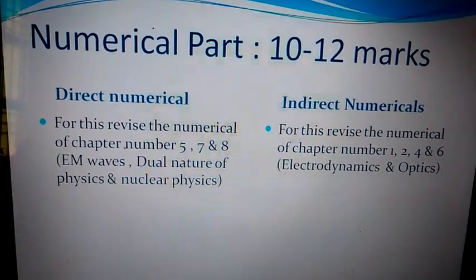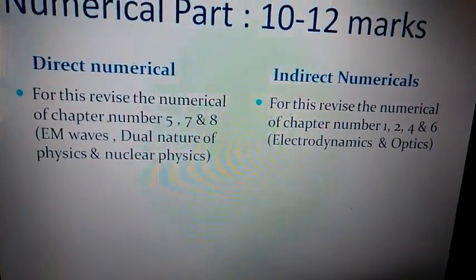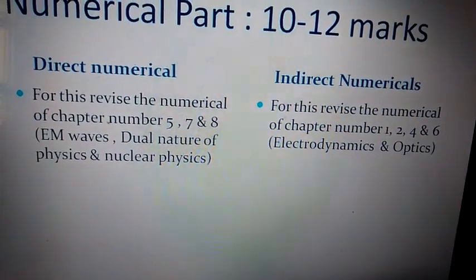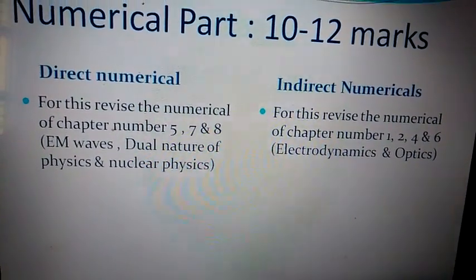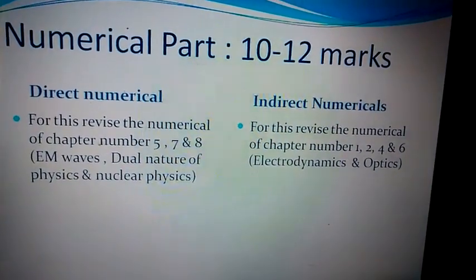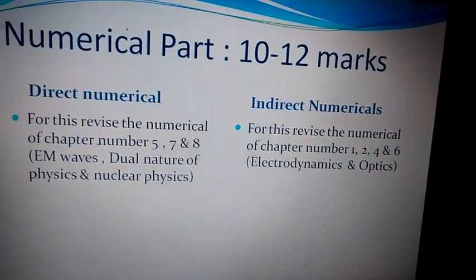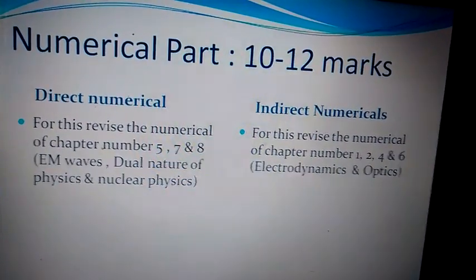When I will talk about the numerical part, then as I have said in my earlier video, there are direct numerical and indirect numericals. Direct numerical comes from the fifth, seventh, eighth unit. And indirect numericals come from the first, second, fourth and the sixth chapter. That is from the Electrodynamics and from the Optics part. So students, you must revise these numericals from these chapters only.